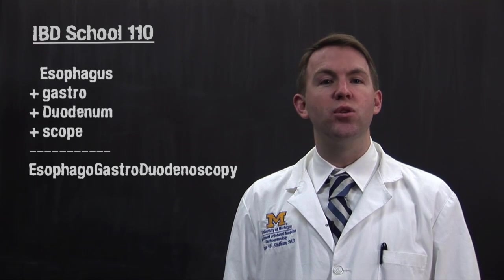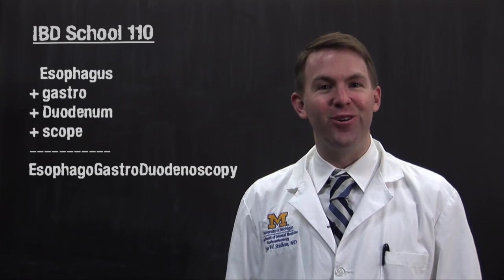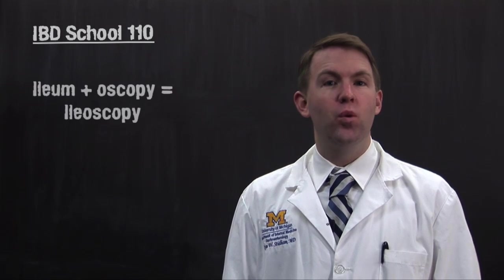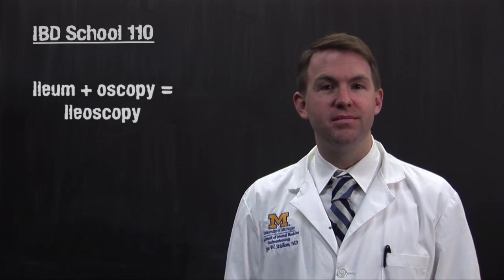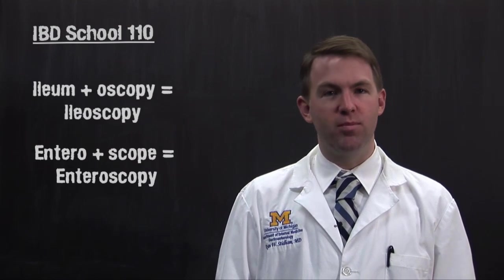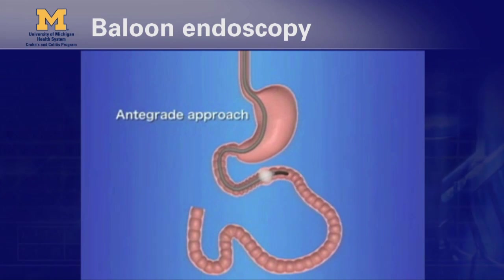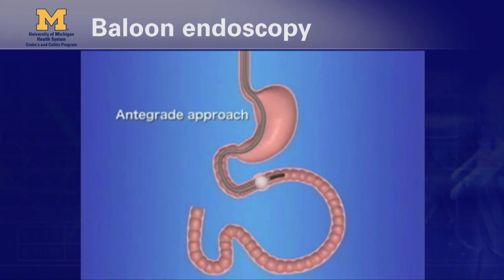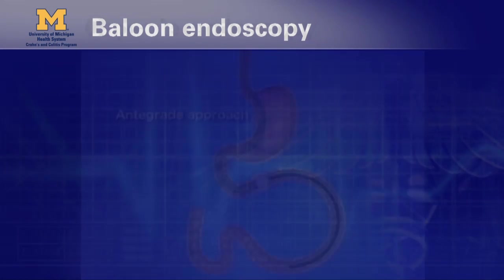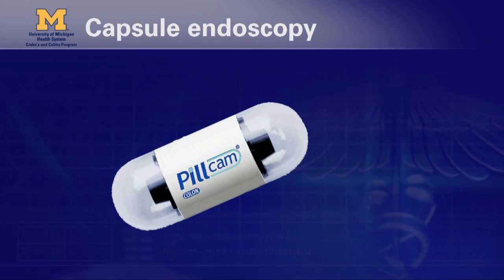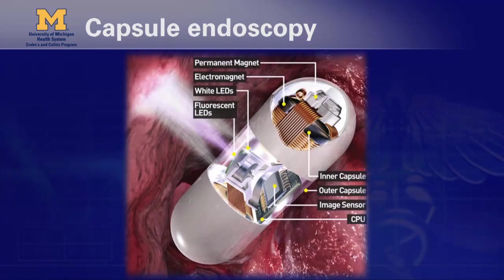When we put a scope through the mouth and look at the esophagus, the stomach, and the duodenum, we call it esophagogastroduodenoscopy — that's a long word, so we usually just call it EGD. When we look at the ileum, it's called ileoscopy. Enteroscopy looks at deeper parts of the small intestine. Balloon enteroscopy uses a special endoscope with a balloon to reach deeper sections. Capsule endoscopy uses a swallowable camera — some people call it a pill cam — to take pictures of the small intestine.